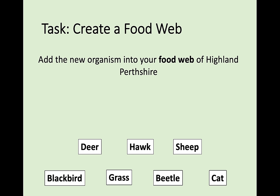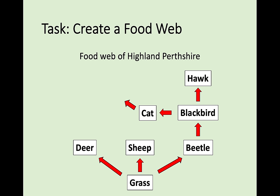Adding a wolf into this changes the interactions significantly. The deer and sheep, which weren't being bothered by anything, could now be eaten by the wolf. The cats that were eating blackbirds could now be eaten by wolves. In the exam, you could be asked about the impact of a new predator being introduced or removed from a food web, so it's worth understanding how these interactions work.